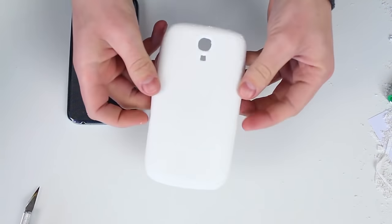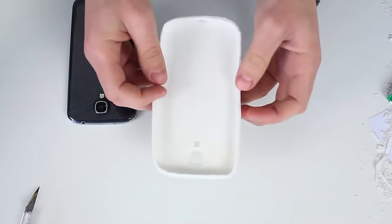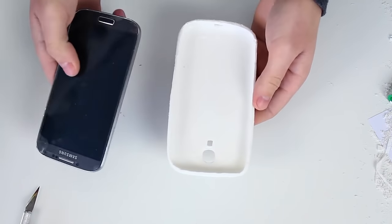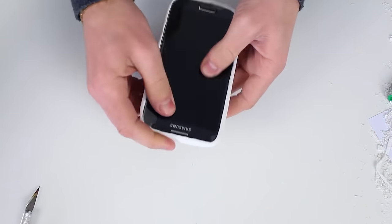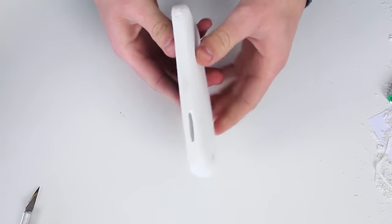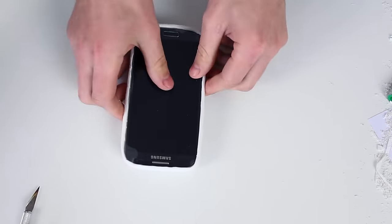So guys, our silicone phone case is ready. We can dye it in our favorite color. But I'd suggest to add some dye when mixing silicone with starch. Thus we will get the color we want at the start.